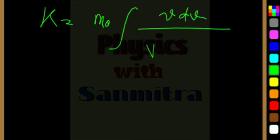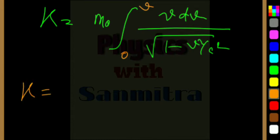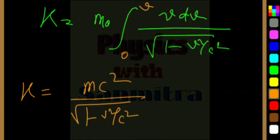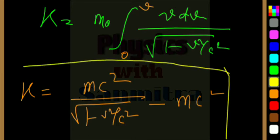So, kinetic energy K, that will be, I will be taking out m0, and we will be writing v into dv by root over 1 minus v squared by c squared. Now, if I integrate it from 0 to v, what will I get? Kinetic energy, if I substitute everything, I will get m0 c squared divided by root over 1 minus v squared by c squared, minus of m0 c squared. This is the expression of kinetic energy what we get.